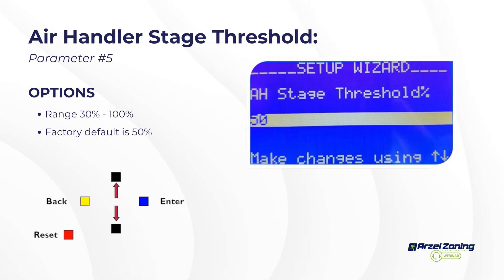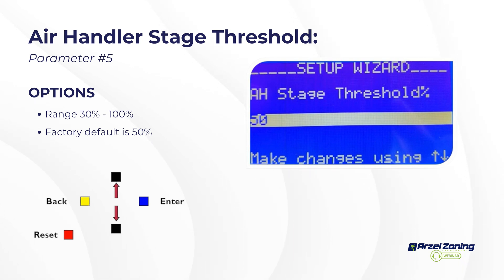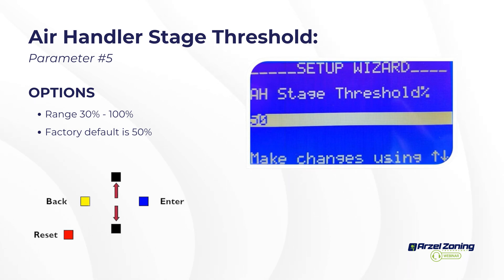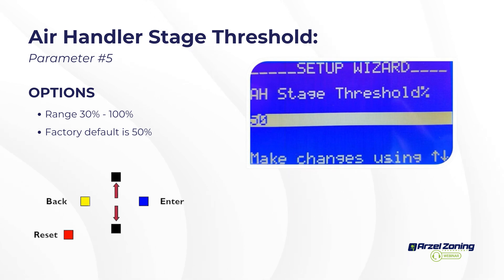The air handler stage threshold works closely with zone weighting — once the sum of active zone weights meets or exceeds the threshold, W2/Y2 outputs to the furnace or air handler are allowed. The Y2 air handler output happens right away, because the system needs to deliver as much airflow as possible to the open ductwork, so you instantly get Y1 and Y2 going to the furnace air handler.